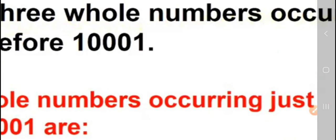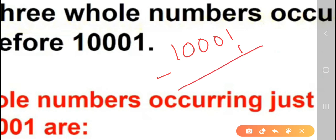Now, 10,001 you will take. So, 10,000 and 1. Minus 1 you are doing. 1 minus 1, 0. Then this 0, 0, 0. So, it will be 10,000.